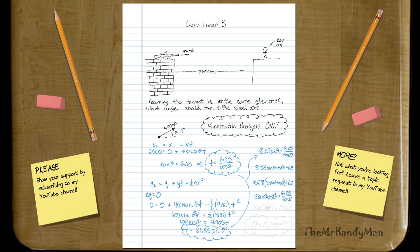What 2 sine theta times cosine theta equals is sine 2 theta, which is great, because then this all equals 0.15328.